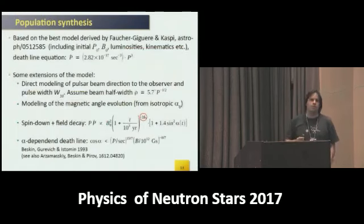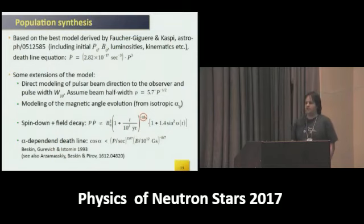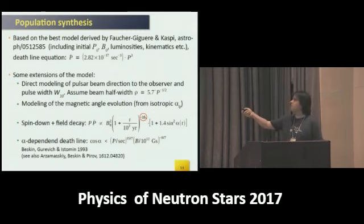What can this tell us about intrinsic magnetic field evolution? We undertook population synthesis of radio pulsars. We started from the classical work by Faucher-Giguère and Kaspi. We adopted their best model of pulsar evolution, including the death-line equation, but also made extensions to their population synthesis.